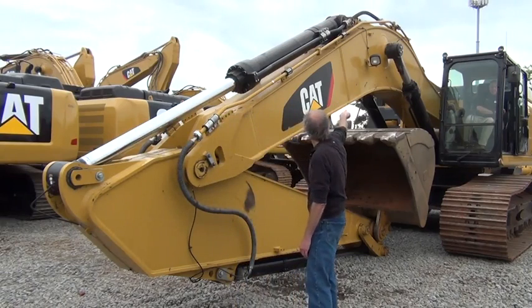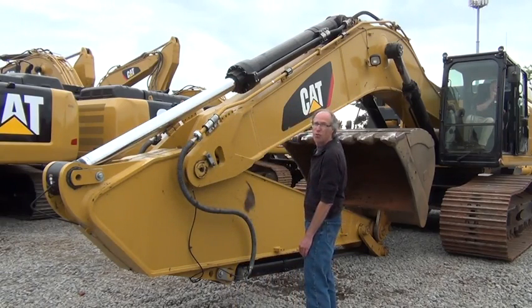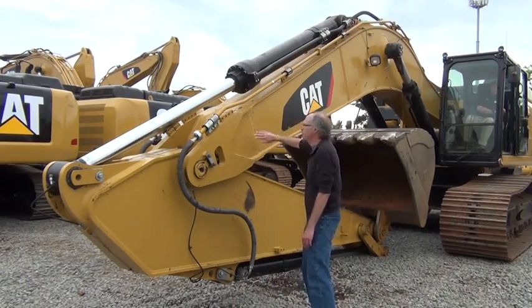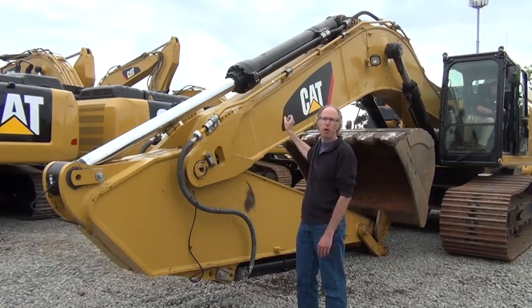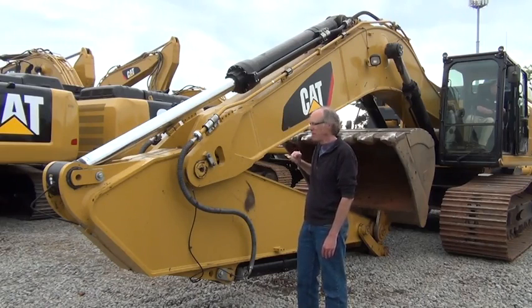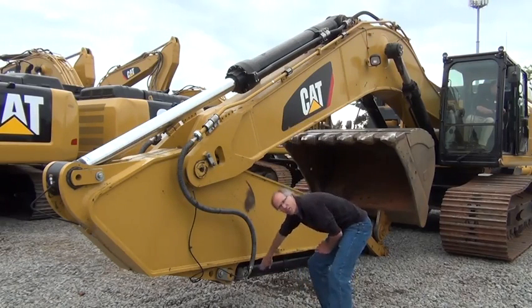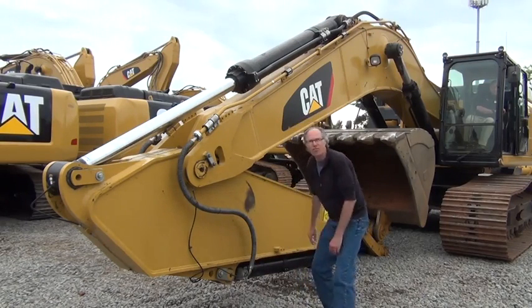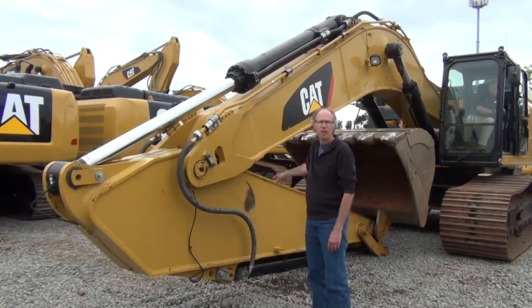Back behind me, you can see the two cylinders that run the boom. This is the boom part of the excavator. Those cylinders are a little smaller, but there's two of them, so they can generate more force. And then the third one is tucked underneath, which is the bucket cylinder that runs the bucket back and forth.